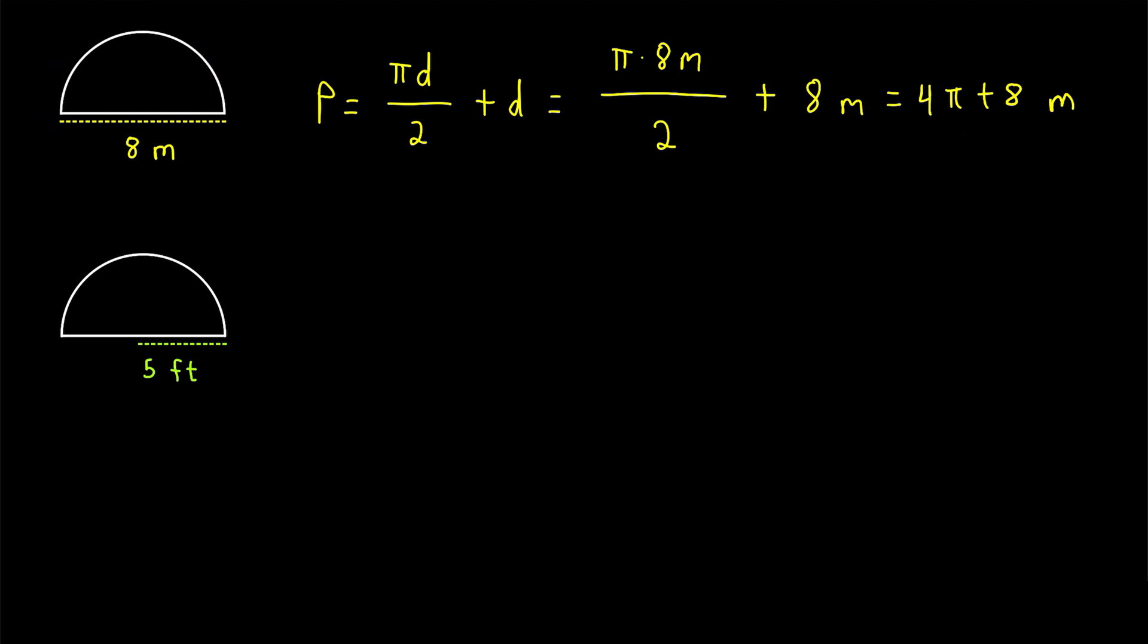If we want to approximate it to the nearest hundredth, that would be about 20.57 meters. And remember, we don't really have to use the units in our calculation. We can just put them on at the end when we get the number of our answer. That's because we're dealing with a distance in meters, and we're using it to calculate another distance in meters, so we know our final answer is going to be in meters.